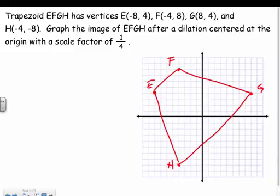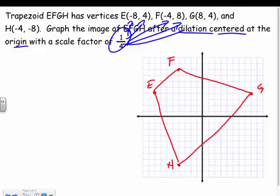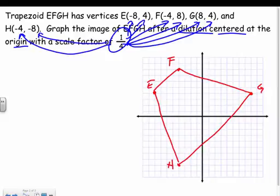It says graph the image of EFGH after dilation centered at the origin. This is nice if it's centered at the origin. It's got a scale factor of one-fourth, so what do you think I multiply every single coordinate by? One-fourth. I'm just going to take one-fourth times every single coordinate, every single x, y.